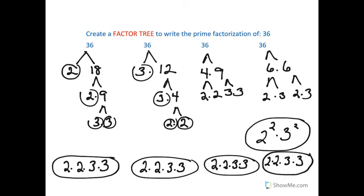And let's just check to make sure that this comes out to 36. 2 times 2 is 4, and 3 times 3 is 9, and 4 times 9 is 36. Or manipulate the numbers in any way you would like to.